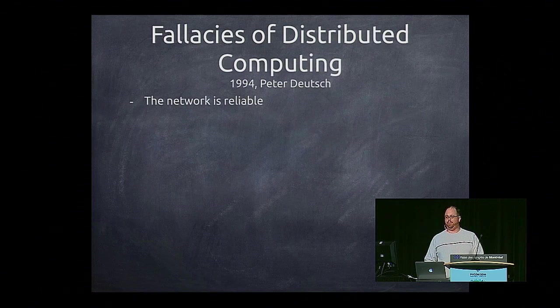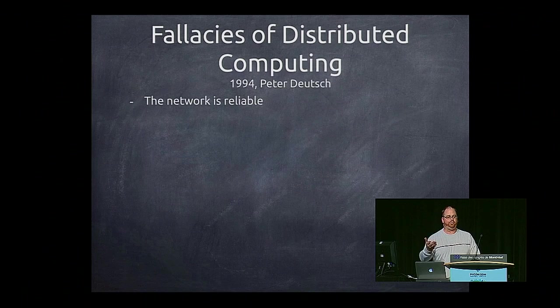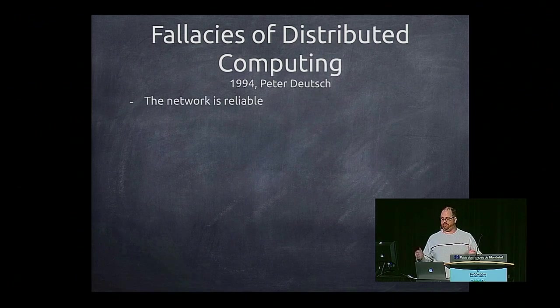First: the network is reliable. How many times do we assume that we'll be able to reach our database, that we'll be able to reach an NFS, that we'll be able to reach a web service?